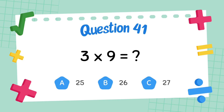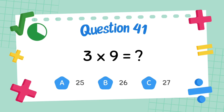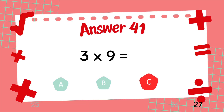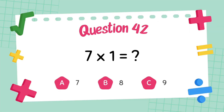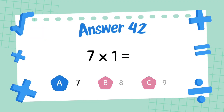What is 3 multiply 9? The answer is 9. What is 6 multiply 5? The answer is 7.